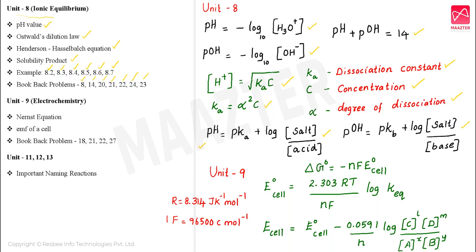Next, Unit 9 is Electrochemistry. This unit covers the Nernst equation and standard EMF of the cell. These are related problems: question number 18, question number 21, question number 22, question number 27. These are very important problems related to the Nernst equation.